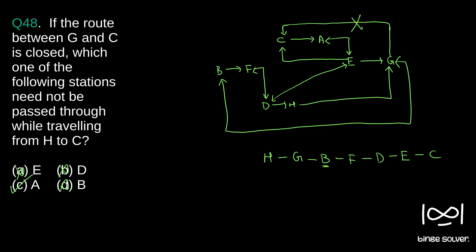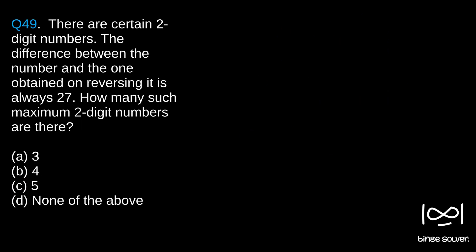Question 49: There are certain two-digit numbers where the difference between the number and the one obtained on reversing it is always 27. How many such maximum two-digit numbers are there? We assume it is a two-digit number.